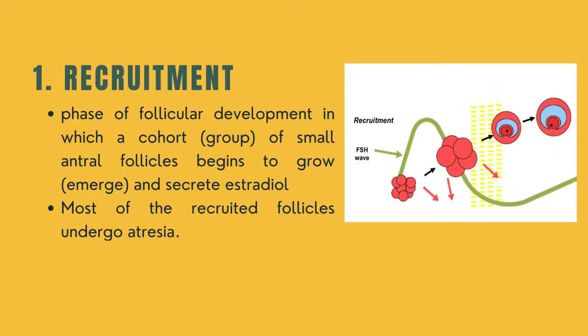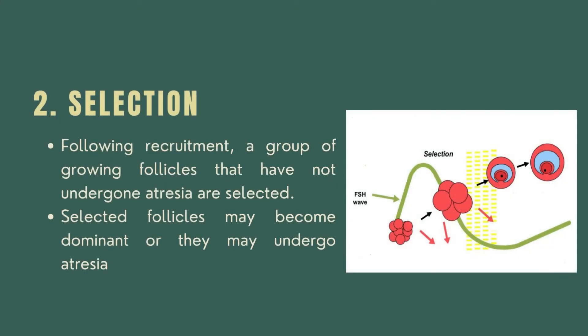Recruitment is a phase of follicular development in which a cohort or group of small antral follicles begins to grow, emerge, and secrete estradiol. Most of the recruited follicles undergo atresia. Following recruitment, a group of growing follicles that have not undergone atresia are selected. Selected follicles may become dominant or they may undergo atresia.